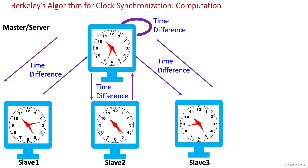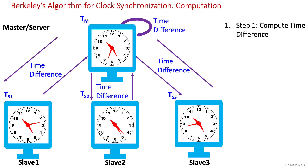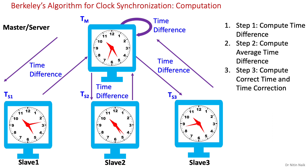For calculating the correct or synchronized time, we need readings of the current time of master and all slaves. Here, master's time is TM, first slave's time is TS1, second slave's time is TS2, and third slave's time is TS3. There are three main steps to compute the correct time: first, compute time difference; second, compute average time difference; third and final, compute correct time and time correction.